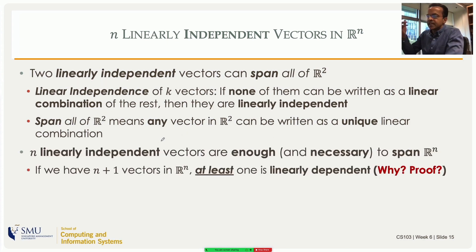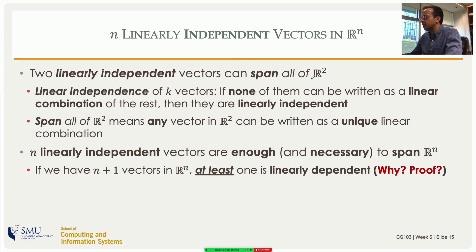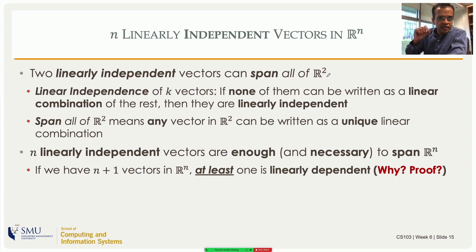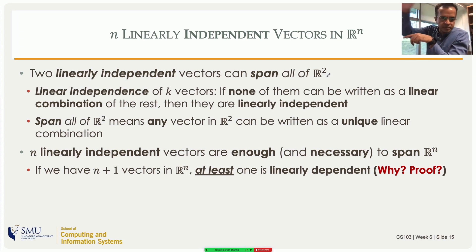Spanning all of R2 means any vector in R2 can be written as a unique linear combination. Extending to n dimensions: n linearly independent vectors are enough to span all of Rn, because two were enough to span all of R2. And they are also necessary — one vector cannot span all of R2, it spans only one line. Two linearly dependent vectors also span only one line, but two linearly independent vectors span the whole plane. So you need exactly two — not fewer, not more.